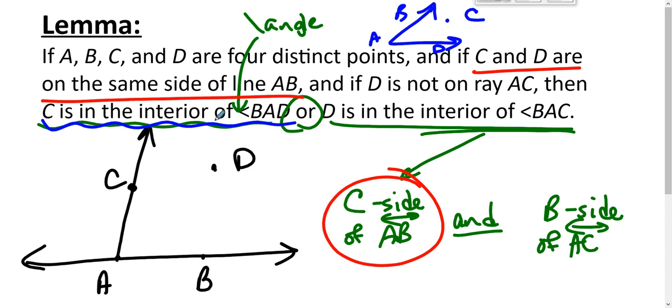B and D would have to be on opposite sides of line AC. But because we assumed that this is not true, then D must be on the B side of line AC. If B and D were on opposite sides of line AC, that specifically puts C in the interior of BAD. And so this argument establishes the lemma.